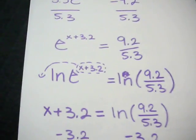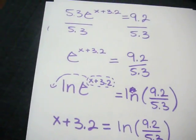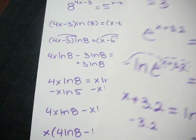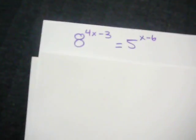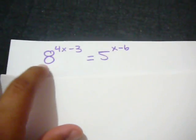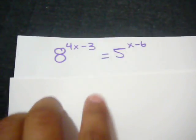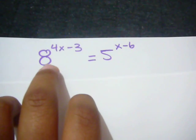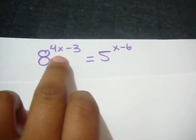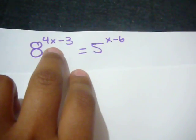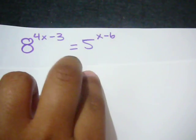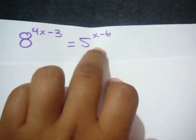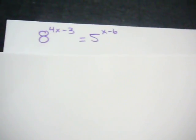Now that we've solved the simple problem, we're going to move on to a harder problem. The problem is 8 to the power of 4x minus 3 is equal to 5 to the power of x minus 6.